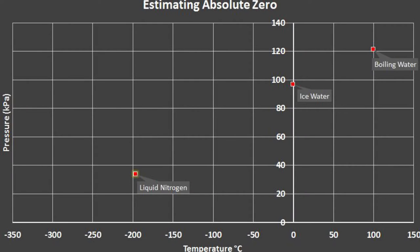We add the data point for liquid nitrogen to our graph. Note that it pretty much fits the same trend as the first two points. We see a steady increase in pressure as we increase temperature. Pressure is proportional to temperature.